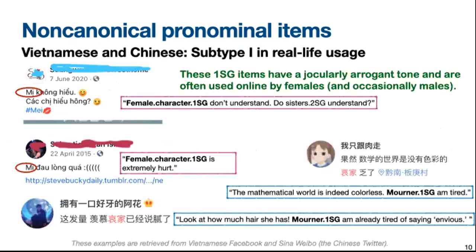To give you some idea of how these terms are actually used, here are some examples of this subtype in Vietnamese and Chinese. In the Vietnamese example, mị không hiểu, các chị hiểu không — here the item mị is used as the first-person singular in place of a typical pronoun, to mean 'I don't understand'. Similarly, in the Chinese example, the term āi jiā is also used as the first-person singular pronominal item, to mean 'I am tired'. For both Vietnamese and Chinese, the first-person singular items have an arrogant tone and are often used by female and occasionally male speakers.